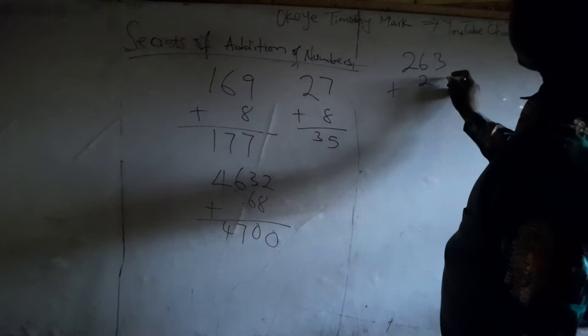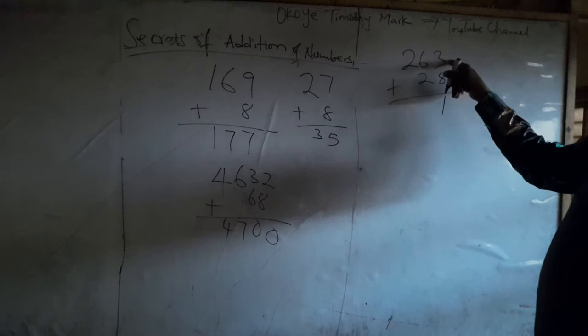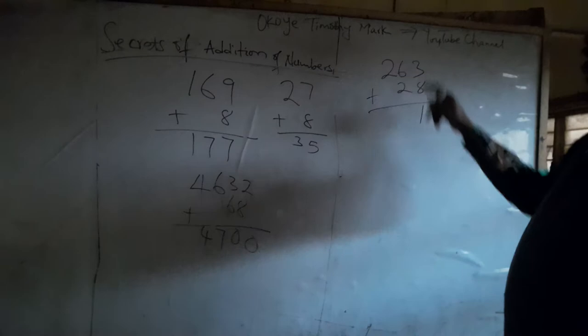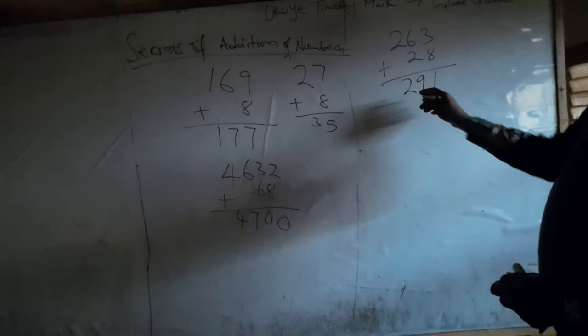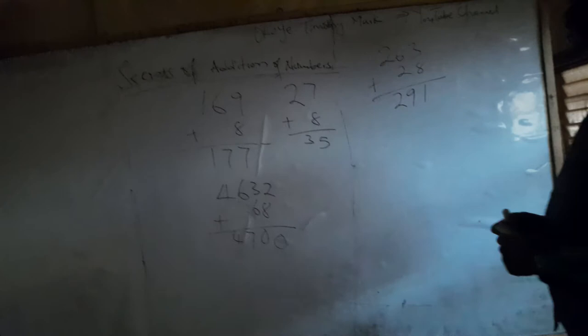I have something like 263 plus 28. The 3 has turned out to be 1 because I'm decreasing it by 2. You decrease the unit side. This is your unit side. This is your 10 side. This is the 100 side. So the unit side is decreased by 2. So the 3 has become 1. And then the 3 side, which is 6, has increased to 1. So this is not 7. 7 plus 6 is what? 9. That is 299.